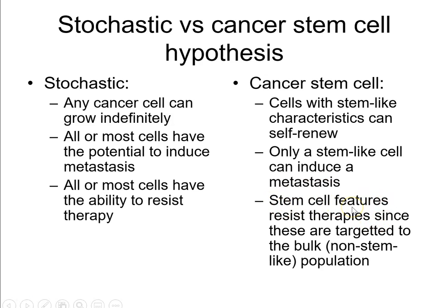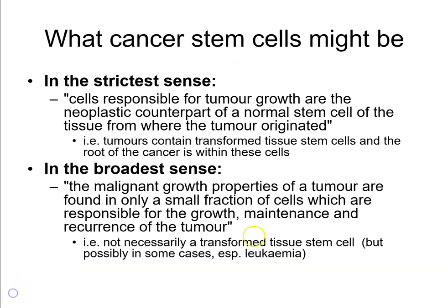Definitions of cancer stem cells have changed significantly over the past 25 years. In the strictest sense, cancer stem cells are the cells responsible for tumour growth and are the neoplastic counterpart of a normal stem cell of the tissue where the tumour originated. For prostate cancer, for example, normal prostate stem cells are alpha-2-beta-1 integrin positive, CD133 positive, and CD44 positive, and we know that cells of the same type exist within prostate cancers with stem cell features. This may well be true in some cancers.